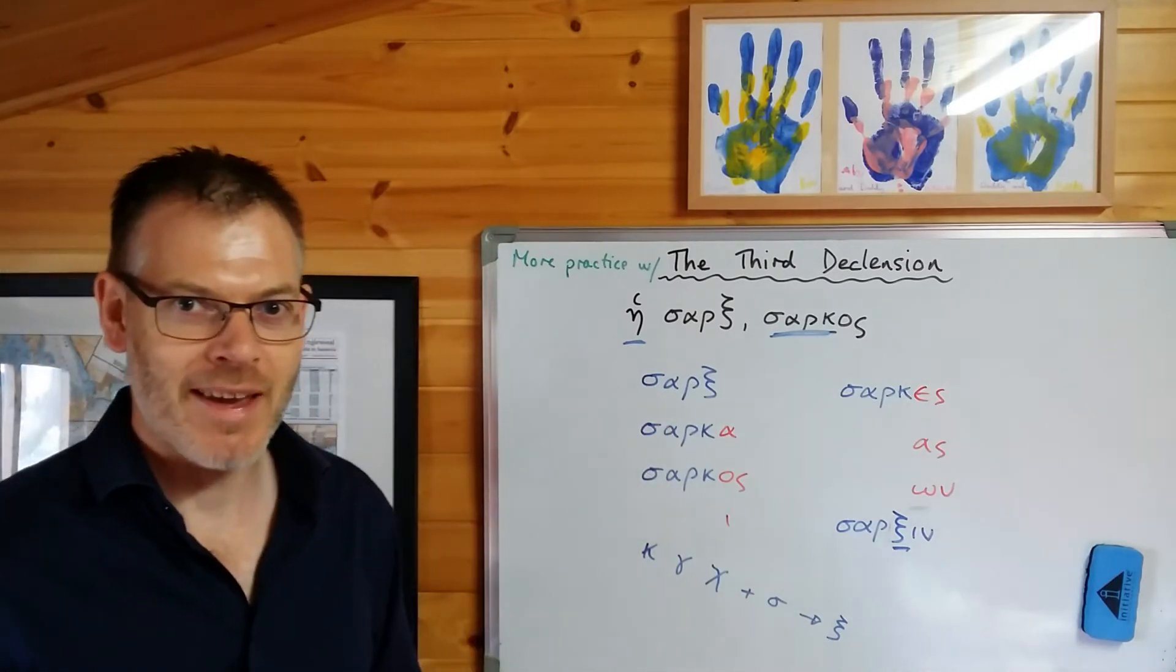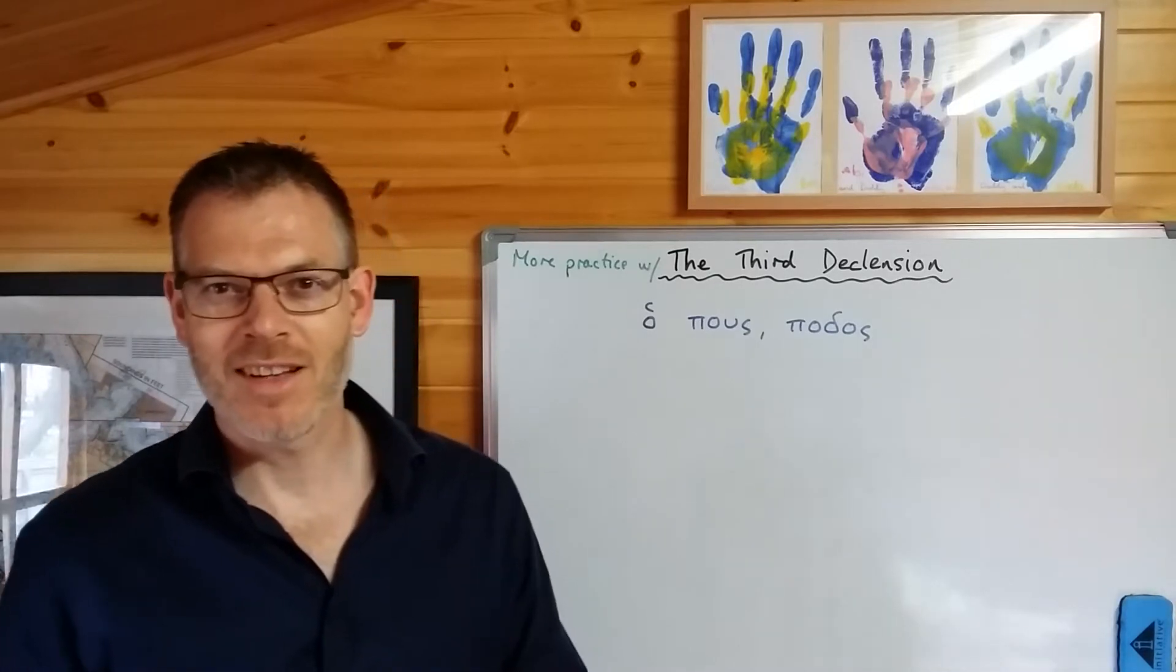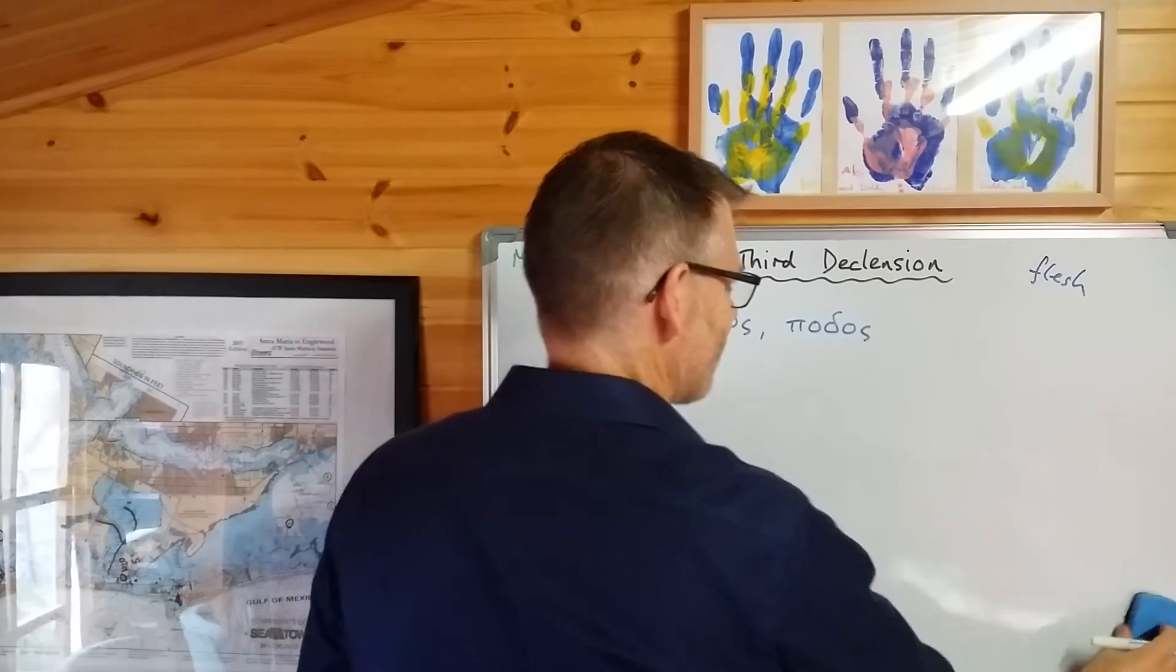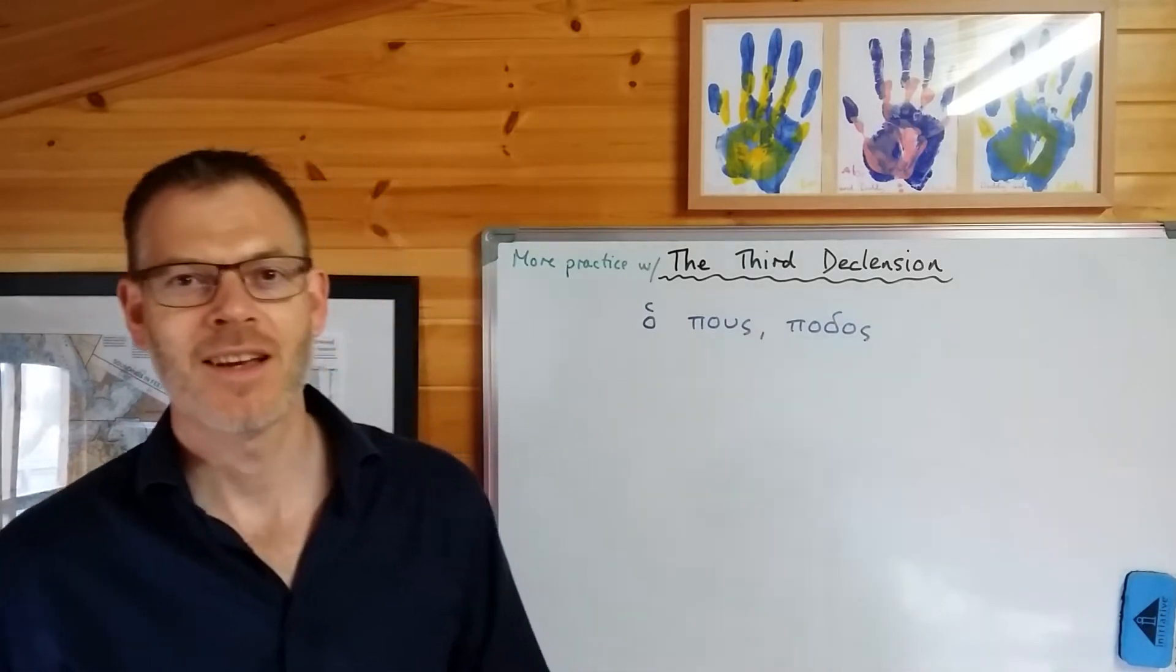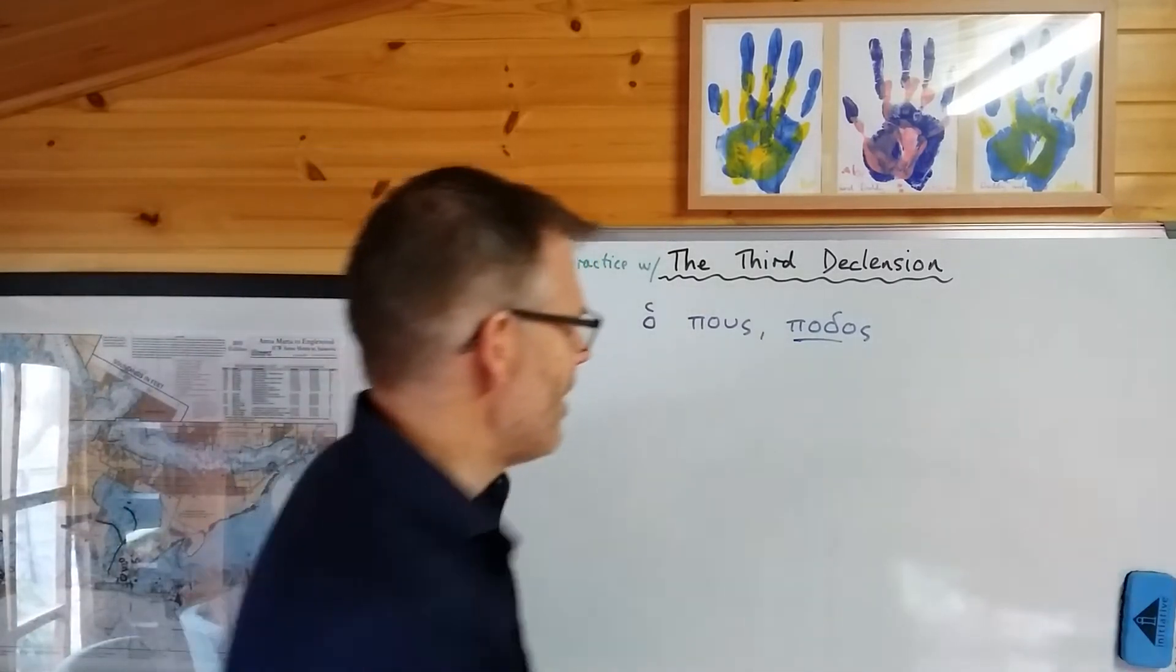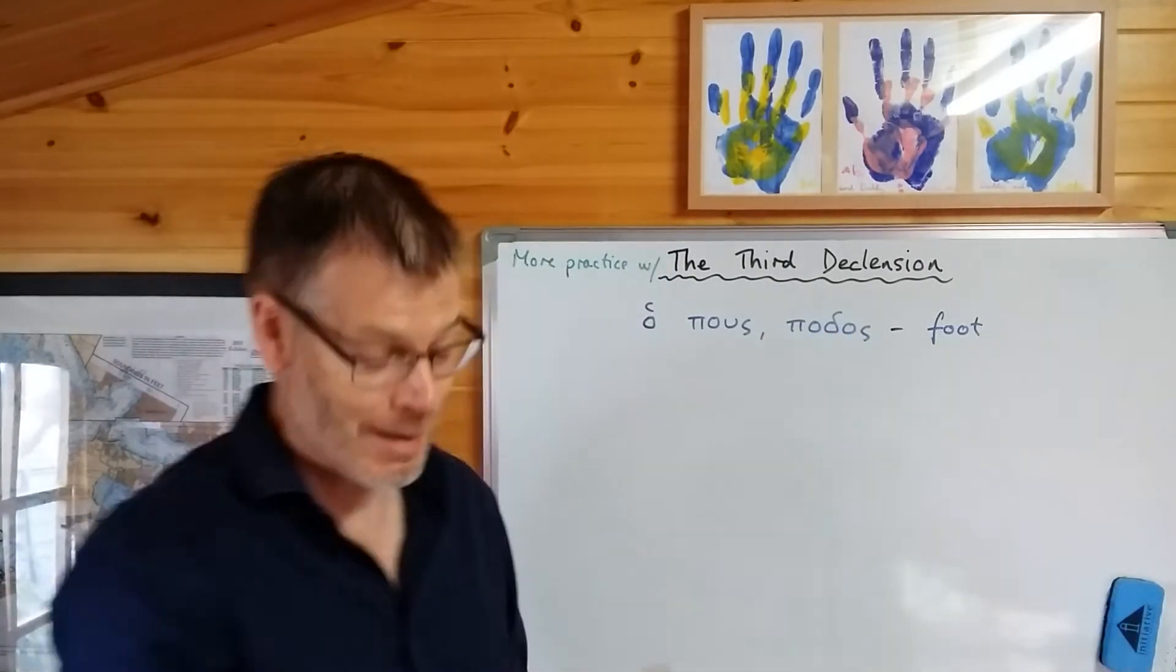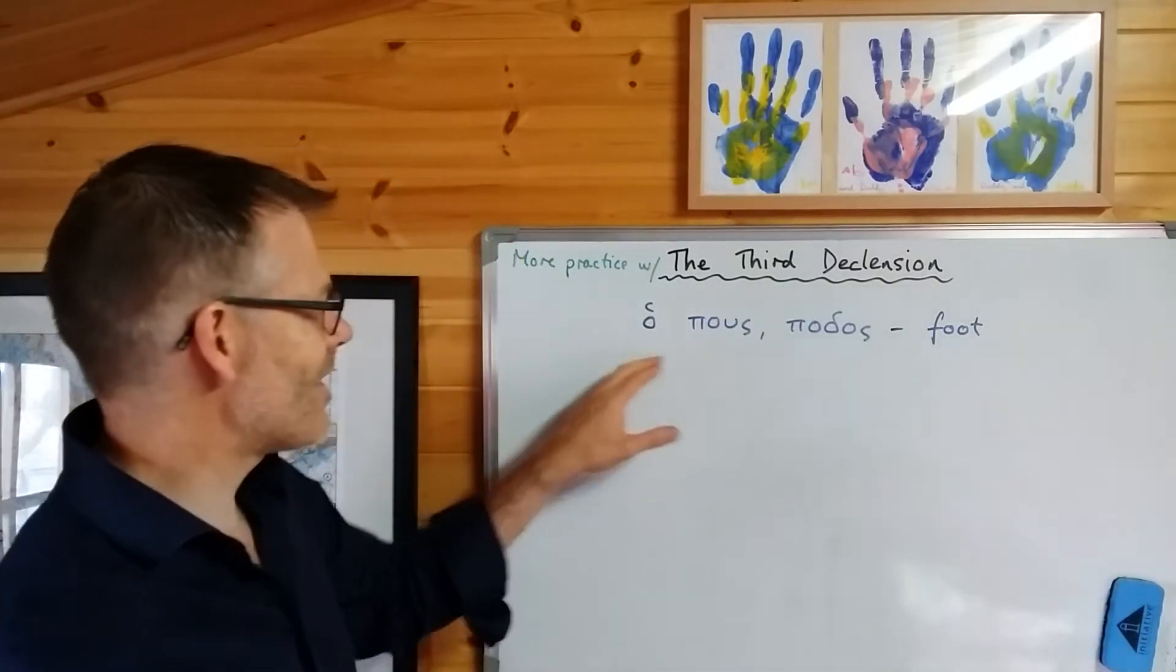So that's the first example. You could have done that all on your own. Come back in one second and we'll do a couple more. Okay, here's another example: ho pous, podos. By the way, I realize I didn't even tell you what sarks means, but you know what sarks means if you've ever read a commentary on the New Testament, or especially Paul the Apostle. Sarks means flesh. There we are, you're not going to forget that in a hurry. It's all over Paul's writing.